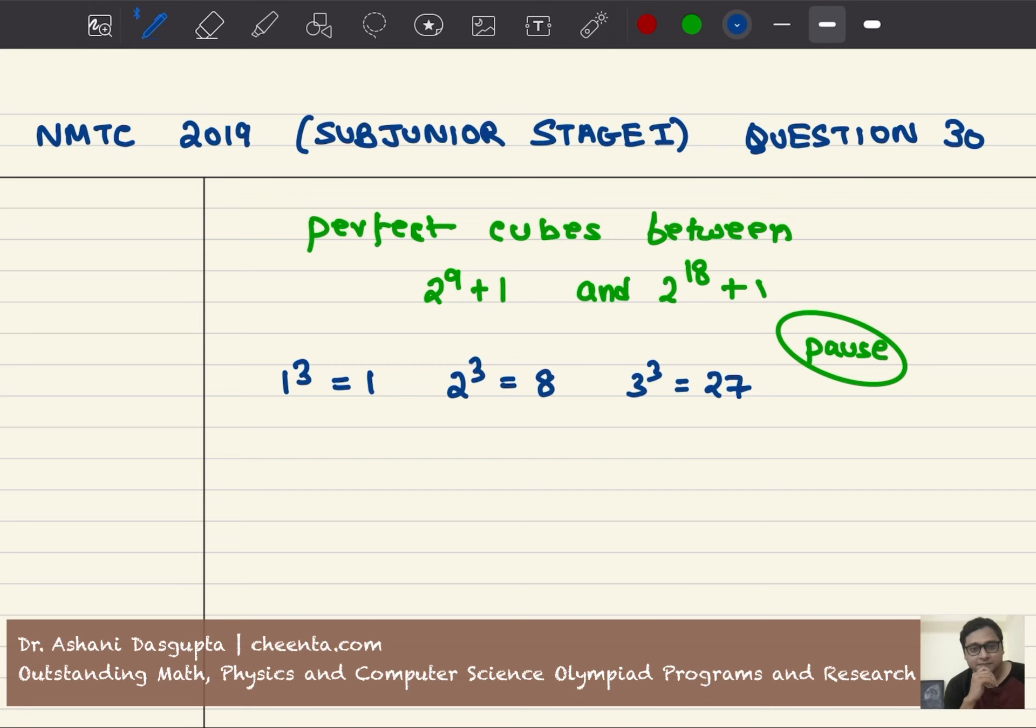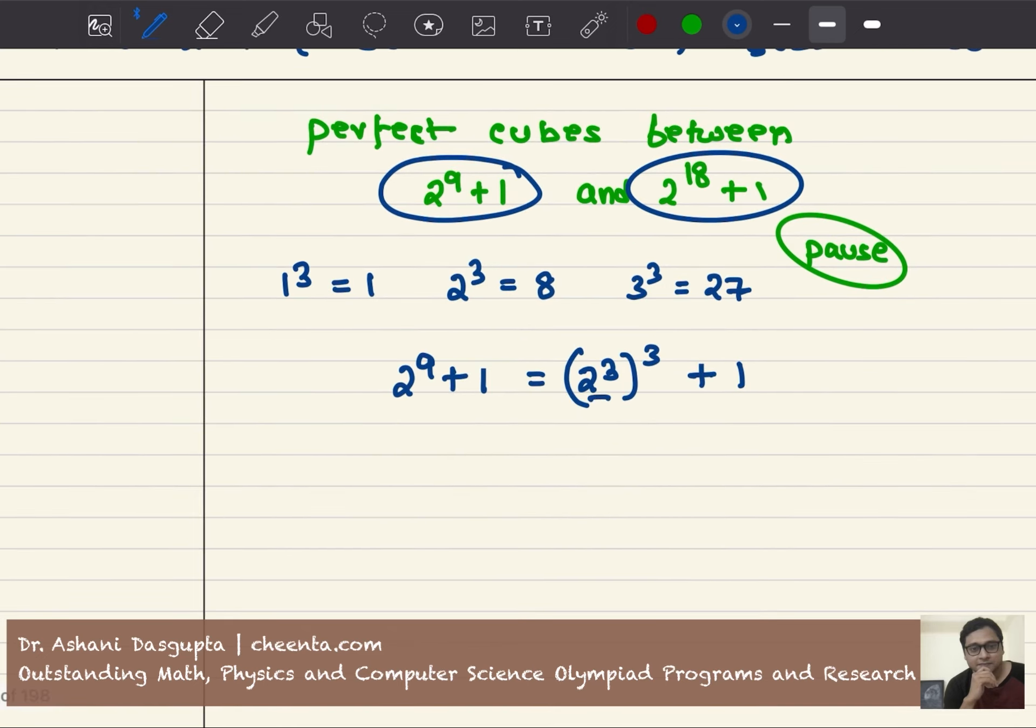Let's analyze the numbers carefully. 2 to the power 9 plus 1 is simply 2 cubed raised to the power 3 plus 1. What is 2 cubed? 2 cubed is 8, right? So this is 8 cubed plus 1. Notice that 8 cubed is by definition a perfect cube.